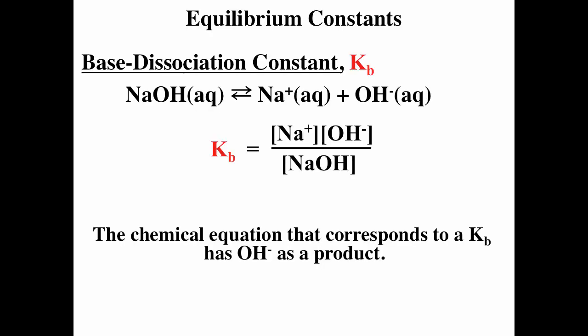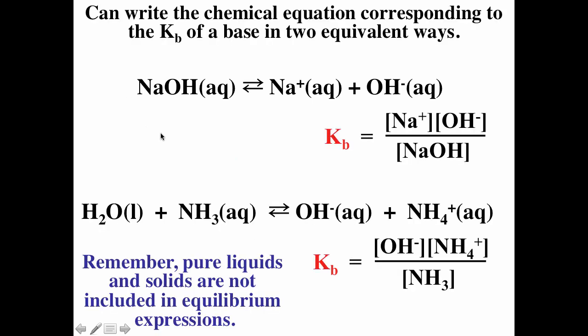A Kb is a base dissociation constant. For Ka you have hydronium ion as a product; for Kb you have hydroxide ion as a product, and you have the base written as a reactant. For a weak base like ammonia — and you should think about ammonia as your typical weak base — notice it doesn't contain any hydroxide. What happens is water reacts with the ammonia. The nitrogen has a lone pair, rips off the H⁺ forming the ammonium ion, and that's how the hydroxide is formed. The weak bases we'll discuss are all similar to ammonia, having a nitrogen with a lone pair.